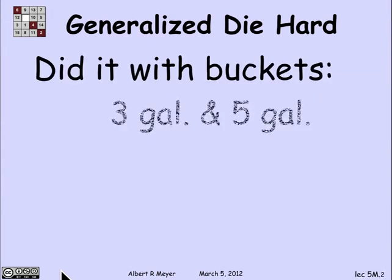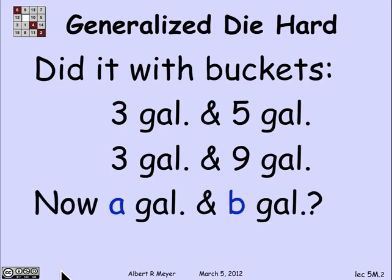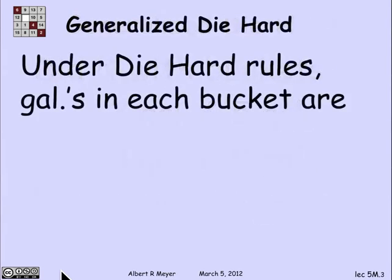We looked at the Die Hard state machine and figured out the behavior of it with jugs of size 3 and 5 gallons, and also with jugs of size 3 and 6 gallons. Let's look at the general case now. Suppose that I have jugs of A gallons and B gallons, where A and B are positive integers.